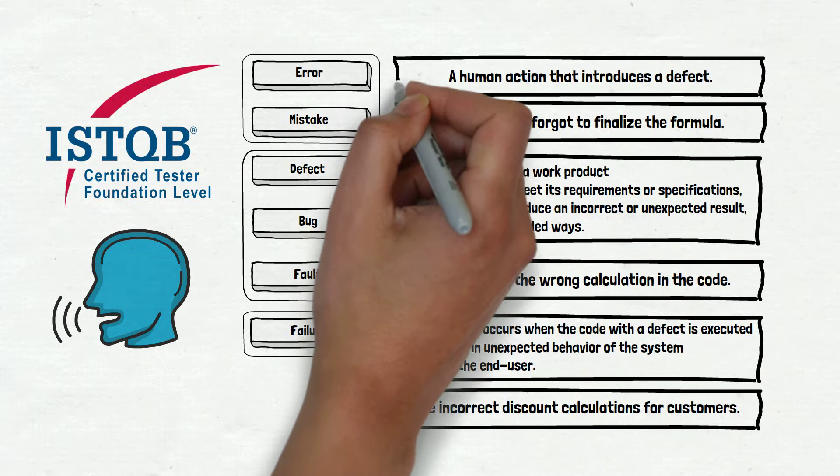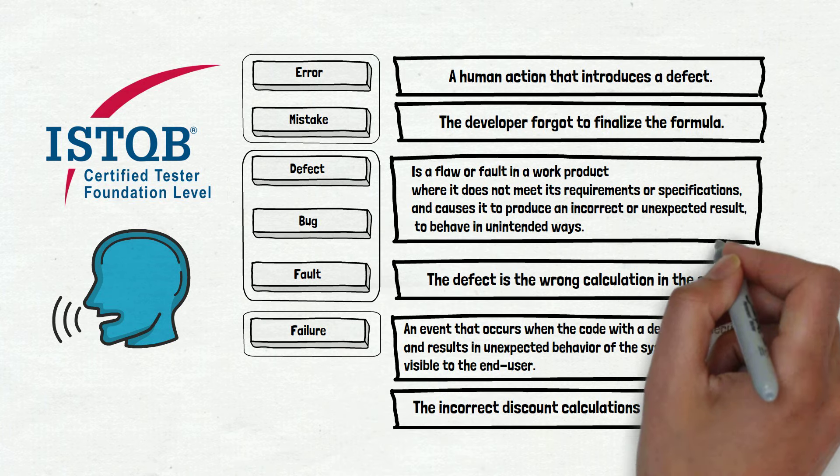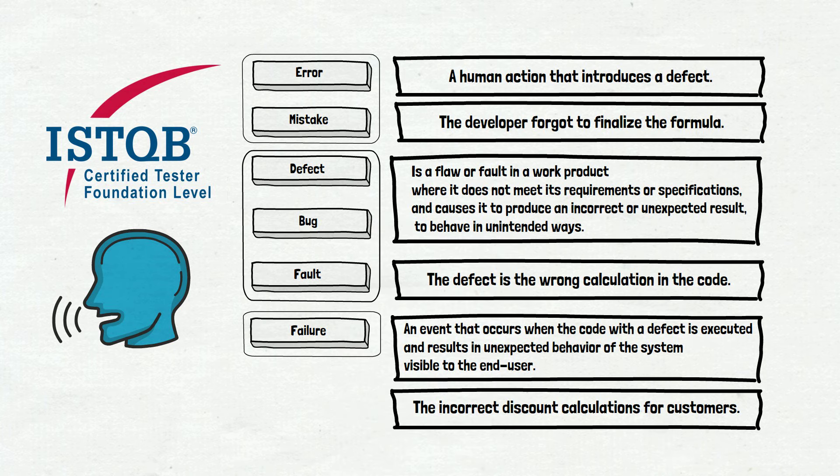The error and the mistake are the same thing: A human action that introduces a defect. The defect is the same as the bug or the fault. It is a flaw or fault in a work product where it does not meet its requirements or specifications and causes it to produce an incorrect or unexpected result or to behave in unintended ways. And the failure: An event that occurs when the code with the defect is executed and results in unexpected behavior of the system visible to the end user.